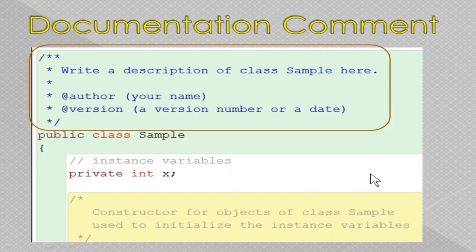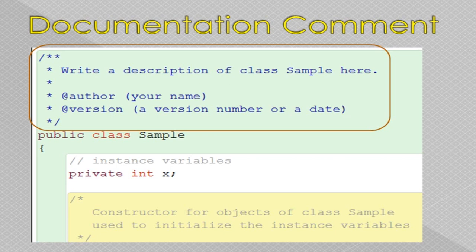You can see an example here. Before the program, some description about the program is given. You can see slash asterisk asterisk is used, and then each and every line starts with an asterisk, and it ends with asterisk slash. Whatever is in between is disabled and cannot be executed by the Java compiler, so it becomes a documentation comment. Hope you understood about comment statements in Java. We will meet in the next video. Till then, thank you.